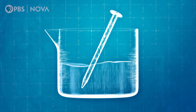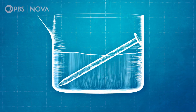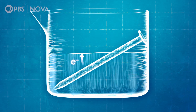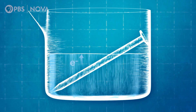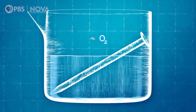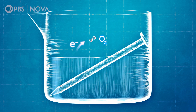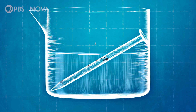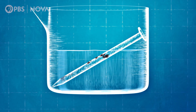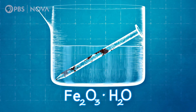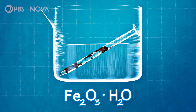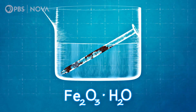Rusting is a similar process, but with iron or one of its alloys. What's an alloy? It's like a mixture of metals. So when iron is exposed to water and oxygen, the iron loses electrons — we say the iron is oxidized. The oxygen is reduced because it gains those electrons, making it more negatively charged. This oxygen reduction reaction, or redox reaction, forms what we see as rust.